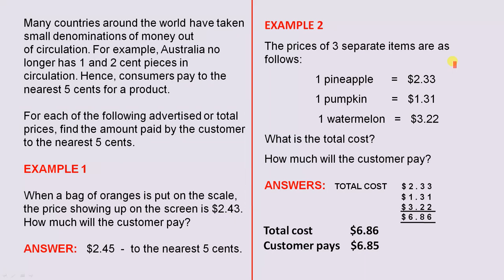Example 2: The price of three separate items are as follows — a pineapple, a pumpkin and a watermelon. What is the total cost and how much will the customer pay? When you add up the prices as they are, the total cost will be $6.86. But because we have to round off to the nearest 5 cents, the customer pays $6.85.